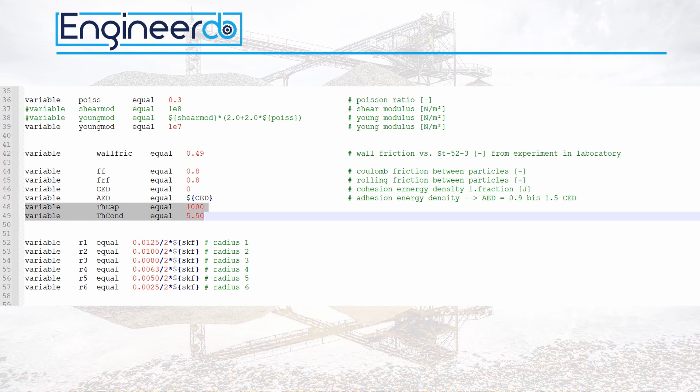we define the thermal capacity of the material TH-cap and the thermal conductivity TH-cont. The value for the thermal capacity for the sand I got from Wikipedia. The thermal conductivity will be changed until the temperature curves in the simulation meets the temperature curves from the experiment. This is called calibration.